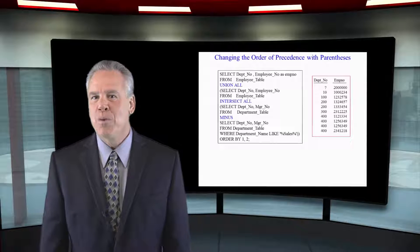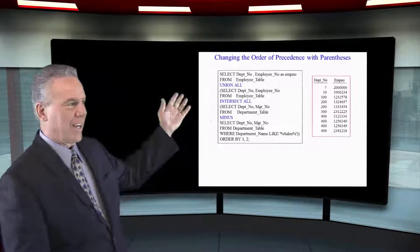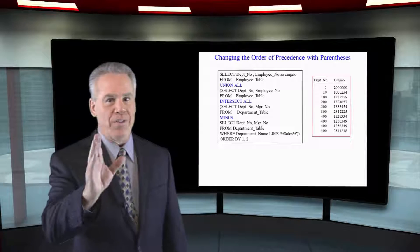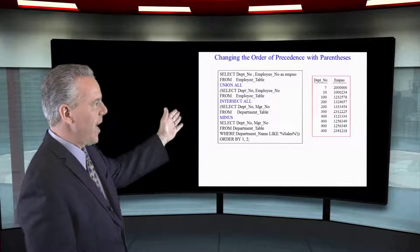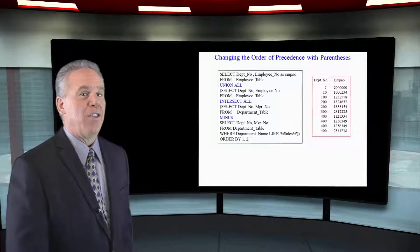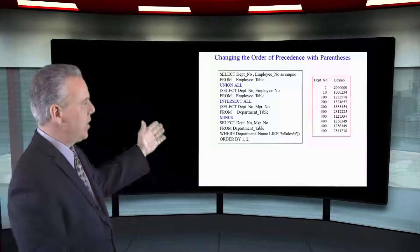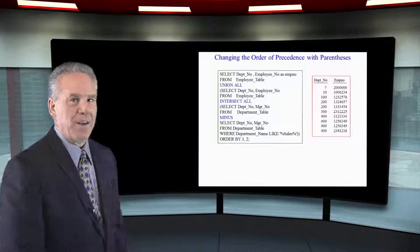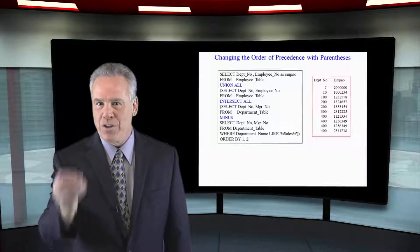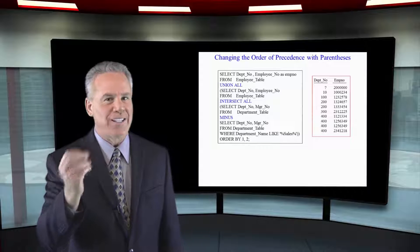There's no parentheses in front of the first select. But there is a parentheses after the union all in front of that second select. And there's also a parentheses after the minus in front of that select. But at the very end there are two parentheses to close this out.